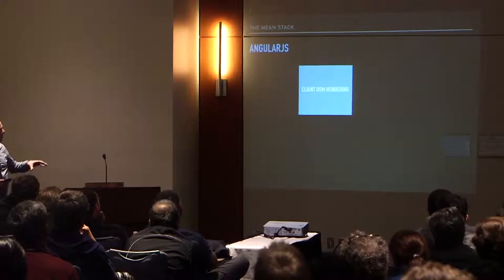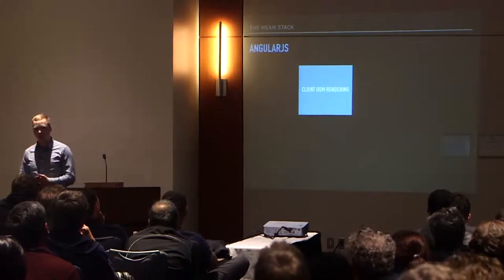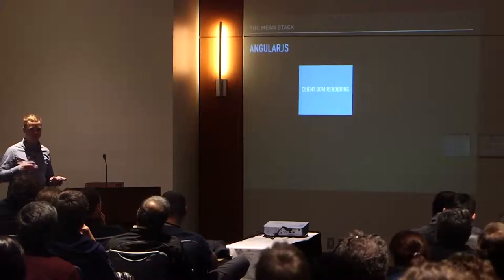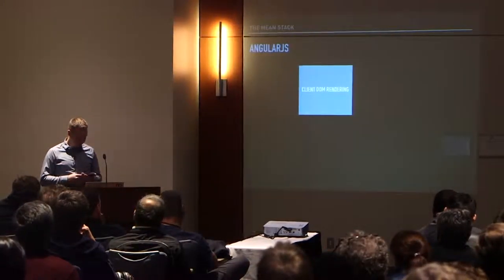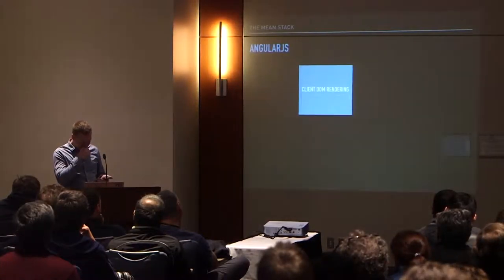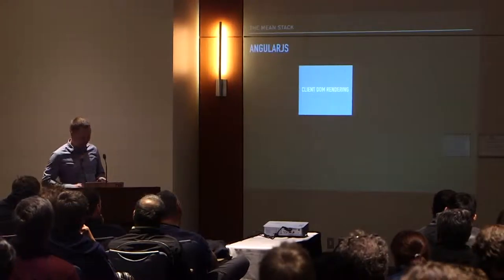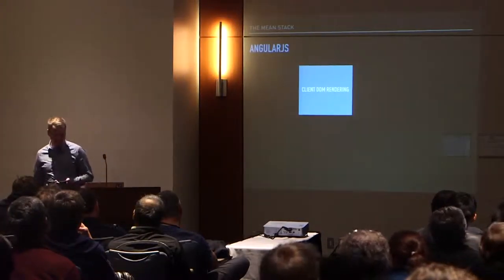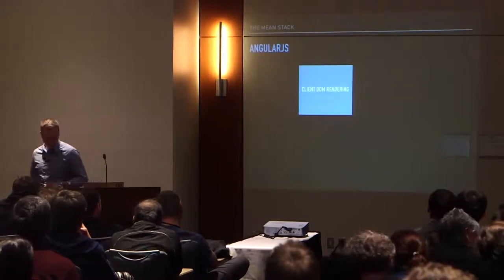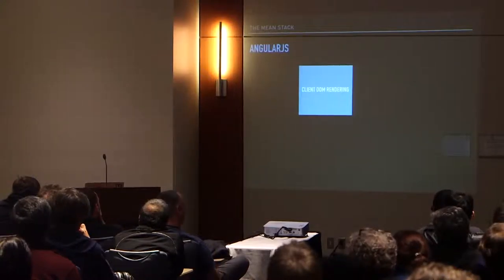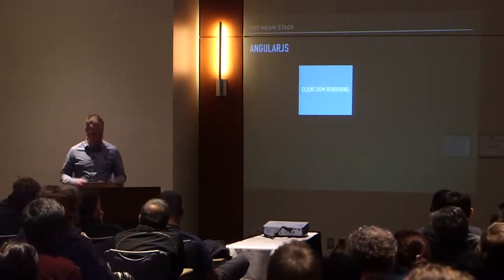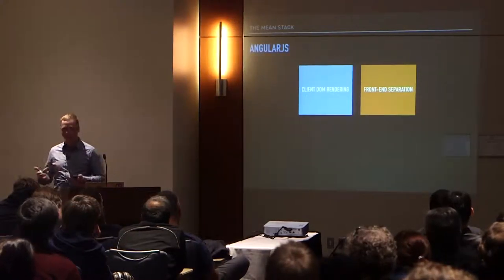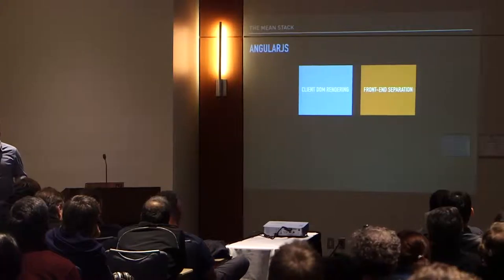Moving on to Angular — with Angular we're able to generate the DOM within the browser. This is opposed to the way we developed applications before, where we would generate the HTML on the server and export it through HTML to the browser. With AngularJS, we can generate the DOM in the browser and this really adds good separation between the front-end code and the back-end code, resulting in cleaner code bases. In fact, we could have multiple repositories for both the front-end and the back-end in this kind of setup.